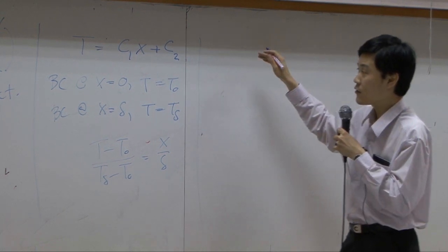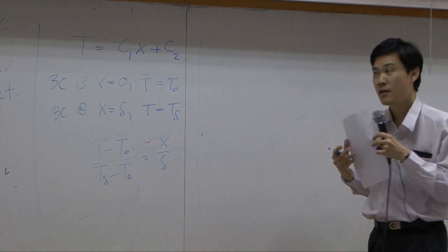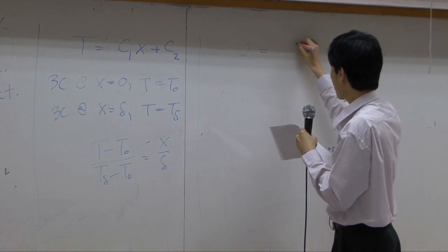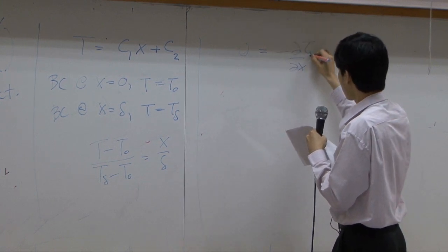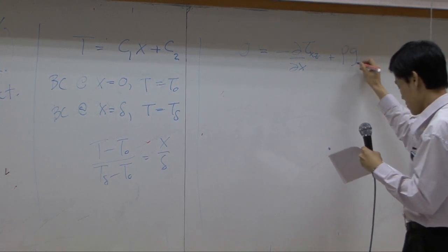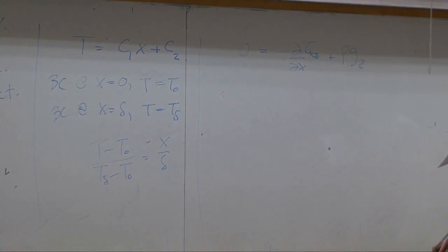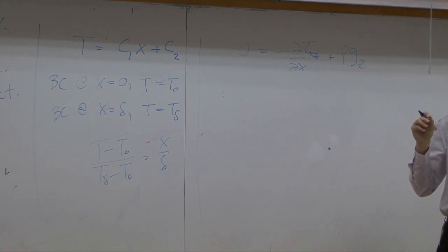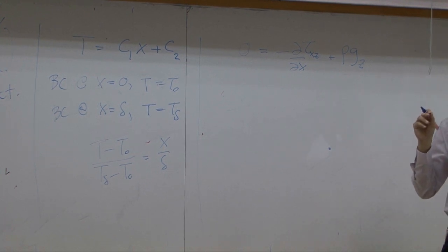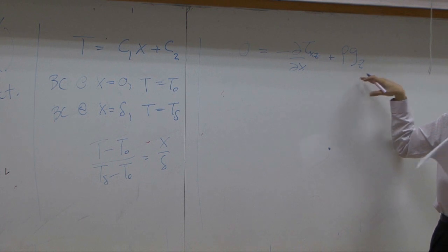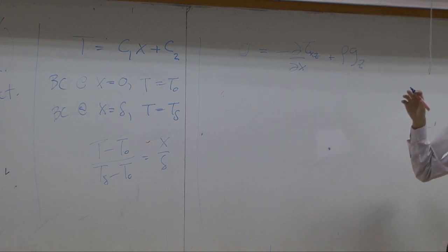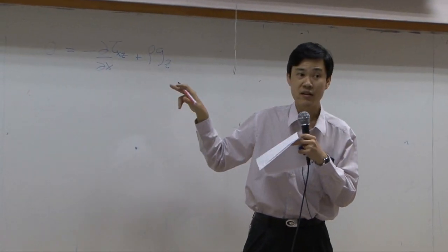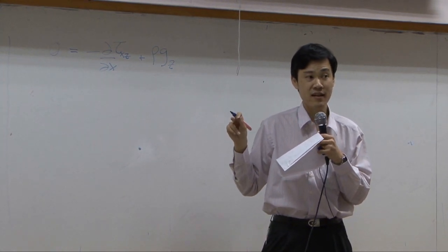Then going back to the momentum transport — last time we had this equation for momentum transport. For the x and y directions the equation of motion gives nothing useful. Only from the z-direction do you end up with this equation. We need to use the equation of motion in terms of tau, not in terms of velocity, because viscosity is not constant anymore.